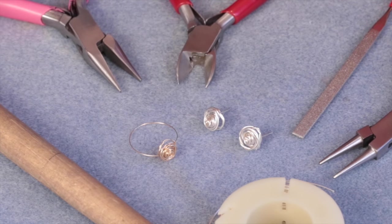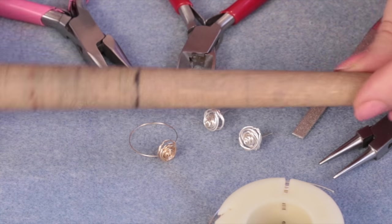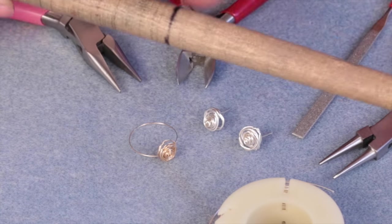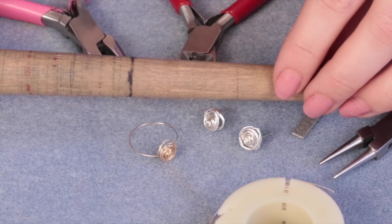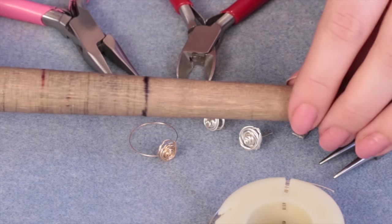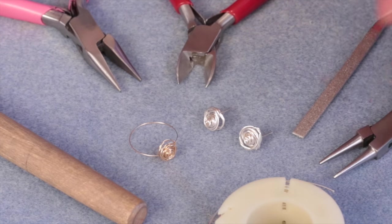What you're going to need for this project is a mandrel, which is this wooden piece here. You can get steel ones or wooden ones - it's basically just a cone shape. If you don't have one of these, they're not difficult to get hold of, but you could also just use anything that has a similar shape, maybe a Pritt stick or something like that.